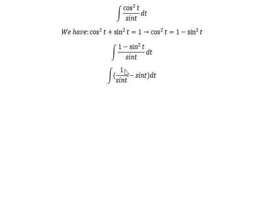The integral of 1 over sin t, you will get negative ln of cot t plus csc t. The integral of negative sin t, you will get positive cos t plus C.